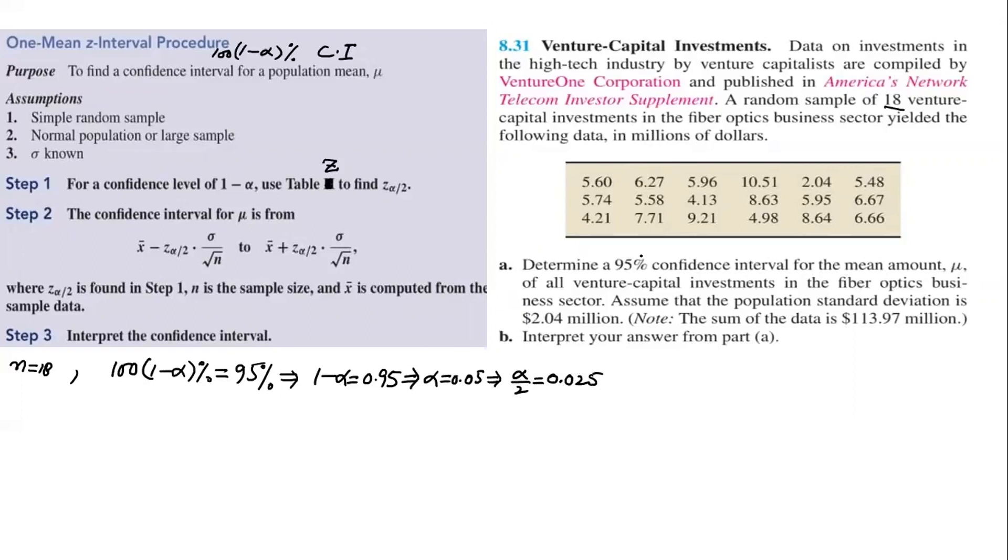Through 95% confidence interval, we found alpha by 2 is 0.025 for the mean amount mu for all venture capital investments in the fiber optics business sector. Assume that the population standard deviation is 2.04 million dollars. So population standard deviation sigma is 2.04 million dollars. And sum of all the data is 113.97 million dollars. So this is sigma X equals 113.97 million dollars.